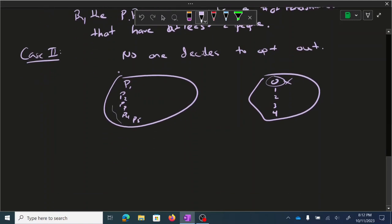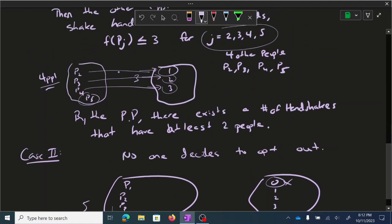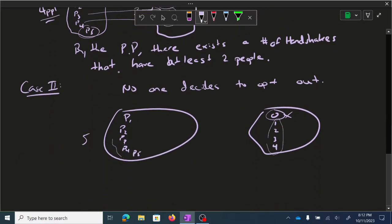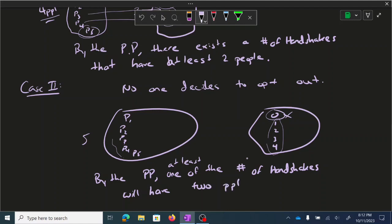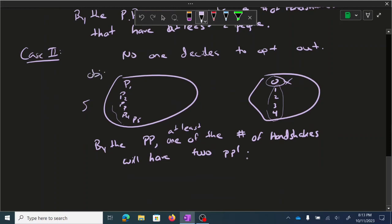And so by pigeonhole principle, at least one of the five people, or sorry, at least one of the number of handshakes will have two people, all right, because these are our objects, and these are our boxes. If I try to place those five objects into those four boxes, at least one of the boxes, the number of handshakes, will have two objects, the two people.